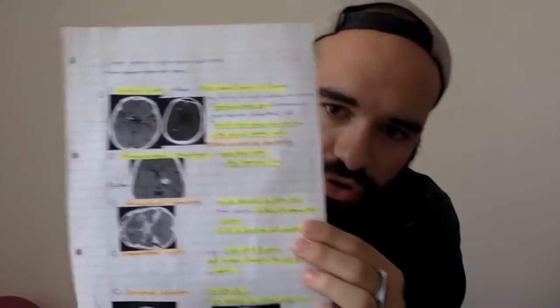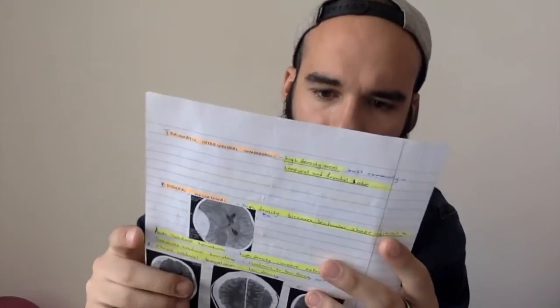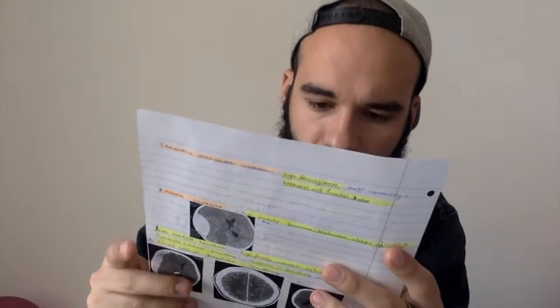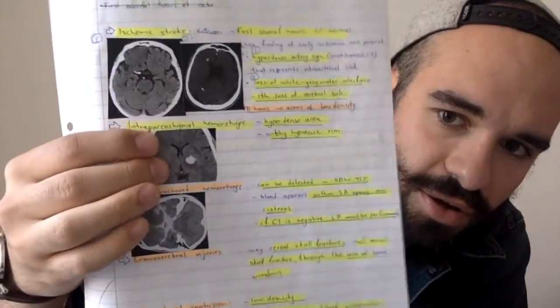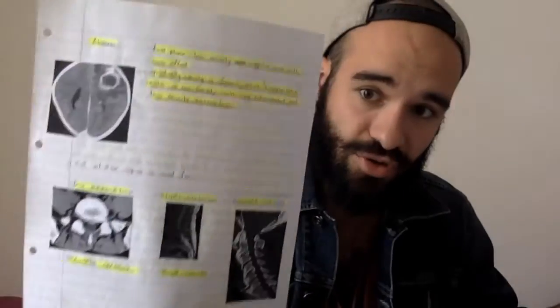What I did is I found pictures of each cancer and printed them. For example, here are the hemorrhages. You can see intraparenchymal hemorrhages — how they look. The subarachnoid — you see it around the Circle of Willis. This is the way you can memorize them. Here I have the tumors, and here I have the abscesses — how they look, ring-shaped. In this way you can learn clinical stuff.